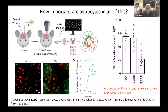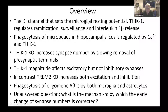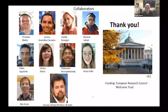To sum up: the potassium channel THIK1 sets the microglial resting potential and regulates surveillance and interleukin-1β release. It also regulates phagocytosis of microbeads and synaptic terminals — knocking out THIK1 increases synapse number by slowing removal of presynaptic terminals, a presynaptic-specific effect. THIK1 affects excitatory but not inhibitory synapses, unlike TREM2 knockout which increases both. Phagocytosis of oligomeric Aβ involves both microglia and astrocytes. The unanswered question is what mechanism corrects the early change in synapse numbers.